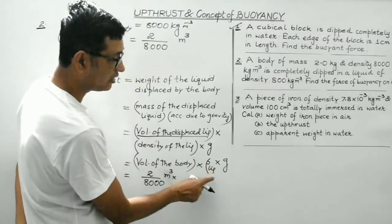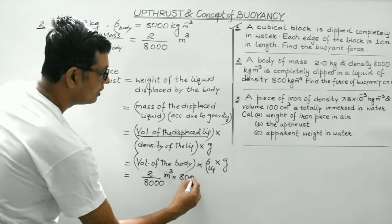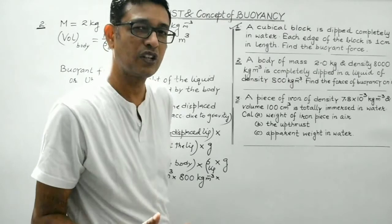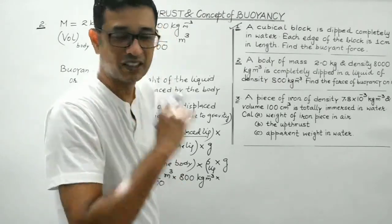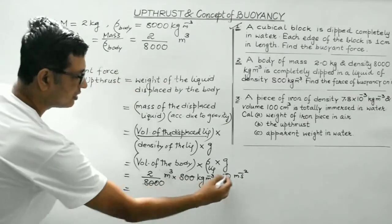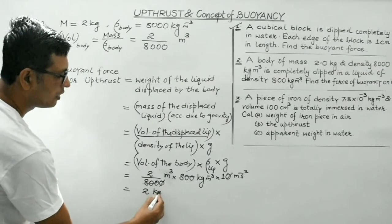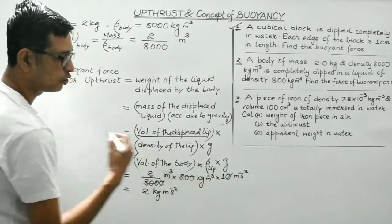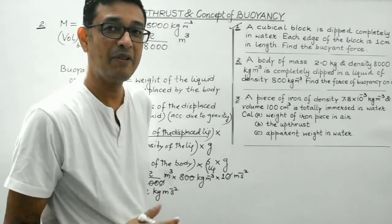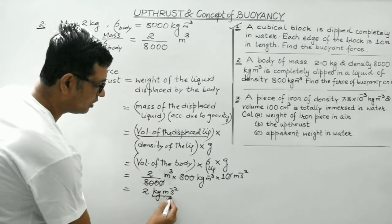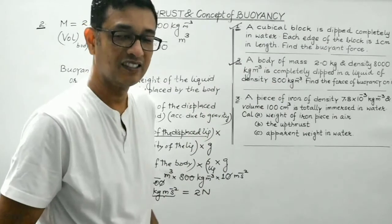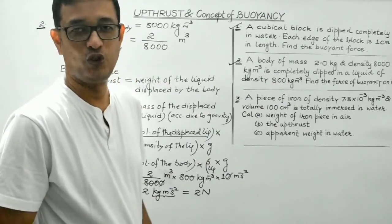Density of the liquid is 800 kg/m³. With g = 10 m/s², the m³ units cancel and we get 2 kg·m/s², which is 2 Newton. So in question 2, the force of buoyancy — the upward force acting on the body — is 2 Newton.